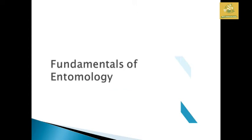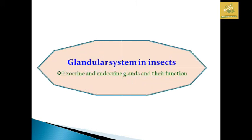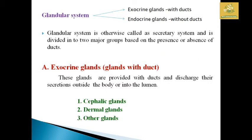In this video we are going to see about Fundamentals of Entomology. I am going to cover the glandular system in insects, combining the exocrine as well as the endocrine glands and also the functions of those glands. The glandular system is classified into two types: the exocrine gland and the endocrine gland. The exocrine glands have the presence of a duct, while the endocrine glands are with the absence of ducts.